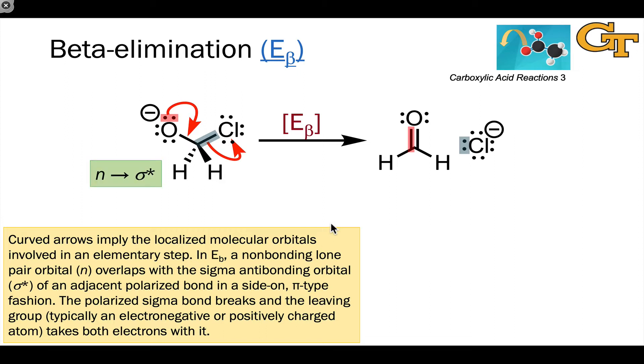So beta elimination is an n-to-sigma-star interaction. The electron source is a non-bonding orbital on the oxygen atom, and the electron acceptor, or sink, or unfilled orbital in the interaction is the sigma-star orbital associated with a polarized, typically carbon-leaving group bond. This bond is polarized toward the more electronegative atom, and that atom departs with a pair of electrons in the beta elimination step.